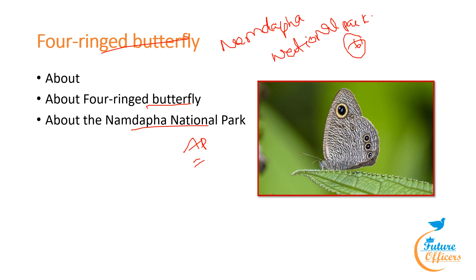Namdapha is located between the Dak Abam range of the Mishmi Hills and the Patkai range. The region is part of both Palaearctic and Indo-Malayan biogeographic areas. The Namdapha river, which originates from the Phabam and meets the Noa Dihing river, gives the park its name. It is the only park in the world to have four feline species of big cats: tiger (Panthera tigris), leopard (Panthera pardus), snow leopard (Panthera uncia), and clouded leopard (Neofelis nebulosa).